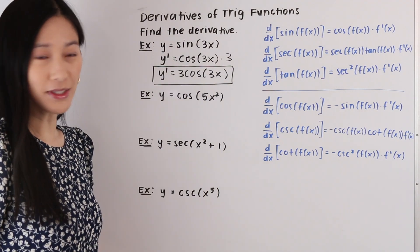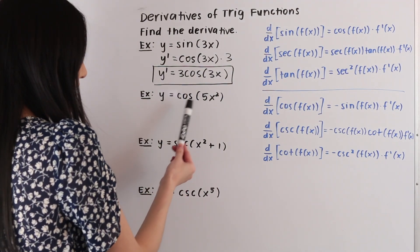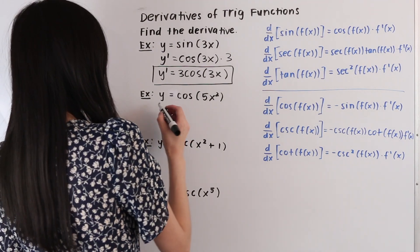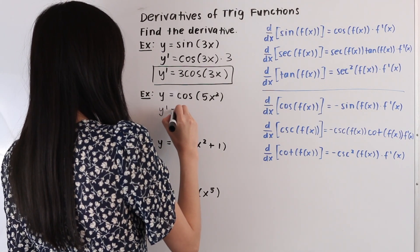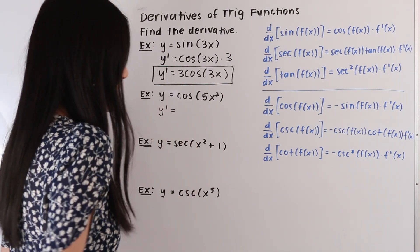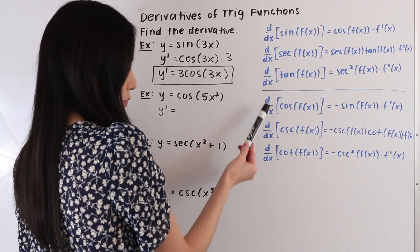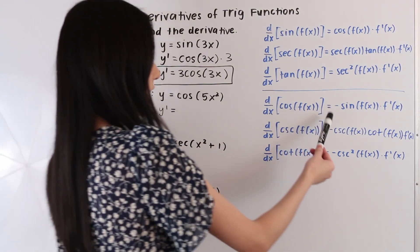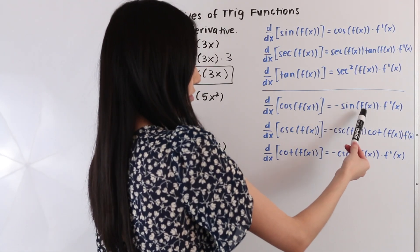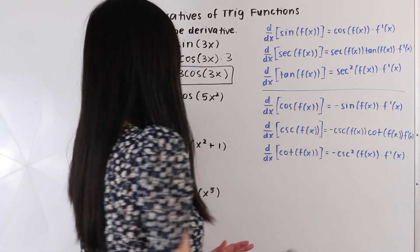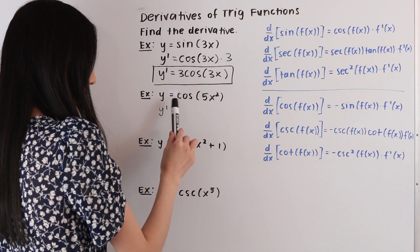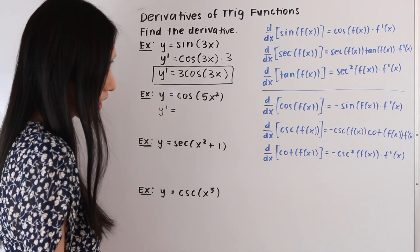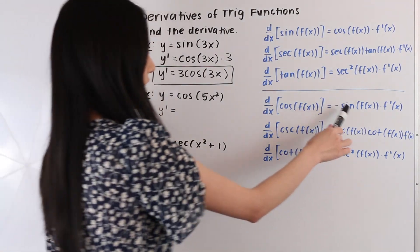In this next example here, we have the function y is equal to cosine of 5x squared. So let's go ahead and take its derivative. So we have y prime is equal to, and so taking a look at our table, we see that the derivative with respect to x of cosine of f of x is equal to negative sine of f of x times f prime of x. So the first thing that we need to do is take the derivative of our trigonometric part. So the derivative of cosine is equal to negative sine.